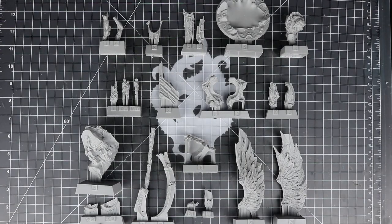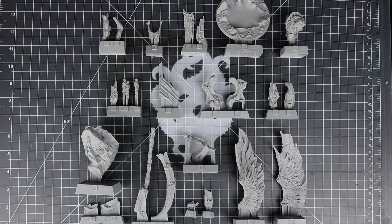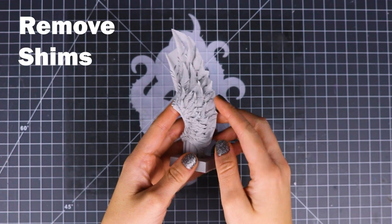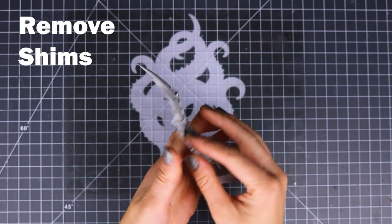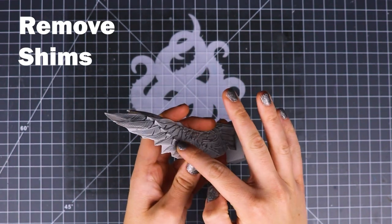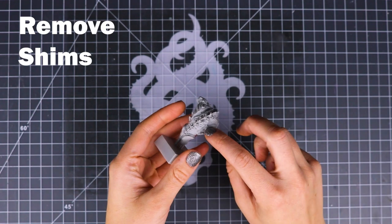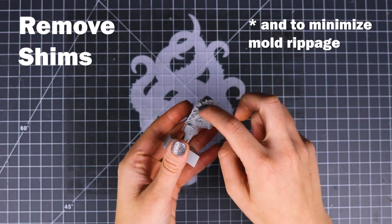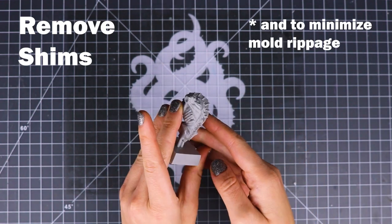So first make sure that you have all the parts in front of you as always. You'll notice that there are a lot more supportive shims on these parts, particularly in the wings. Under each of the wingtips there's a supportive shim just to keep it in a nice shape and along his spine, so be careful when you're removing these.